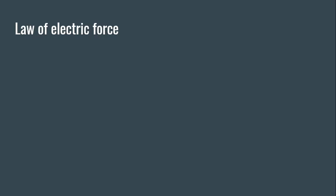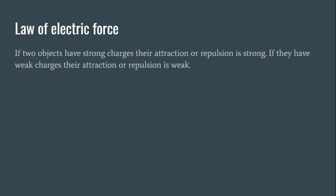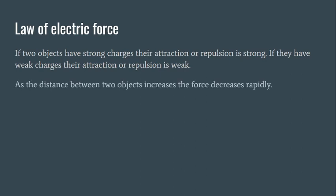When it comes to our law of electric force: if two objects have strong charges, their attraction or repulsion is strong. If they have weak charges, their attraction or repulsion is weak. This makes sense. The more charge the object has, the more ability it has to actually attract another object to it or push another object strongly away from it. Also, a big thing to know is that as the distance between the two objects increases, the force decreases rapidly. So, the further away the two objects get, the less the attraction or repulsion is.